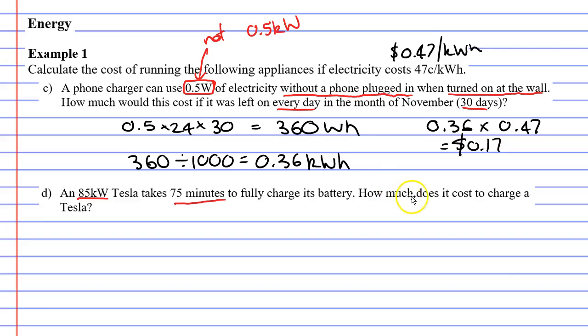So how much does it cost to charge a Tesla? Let's do that. Well, first of all, we need to convert our 75 minutes into hours. Now, 75 minutes is the same as saying 60 minutes plus 15 minutes, which is the same as saying 1 hour, because 60 minutes is an hour, and 15 minutes.